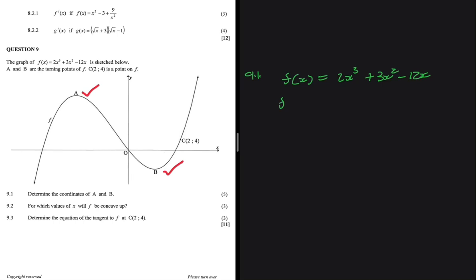So f′(x), differentiating using the power rule, gives us 6x² + 6x − 12. This is the equation of the gradient for the function. At the turning points we equate this to zero and find the x-values, so we get 0 = 6x² + 6x − 12.